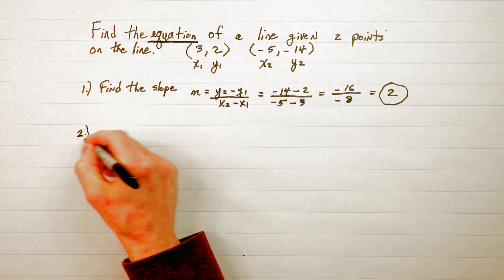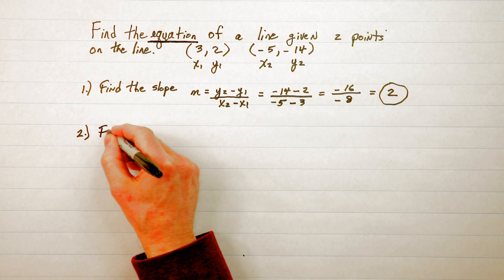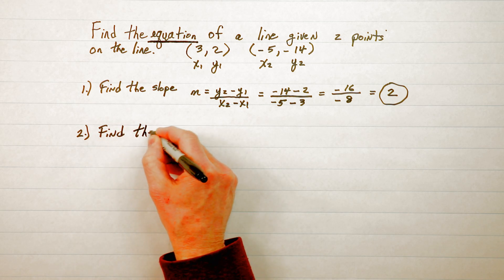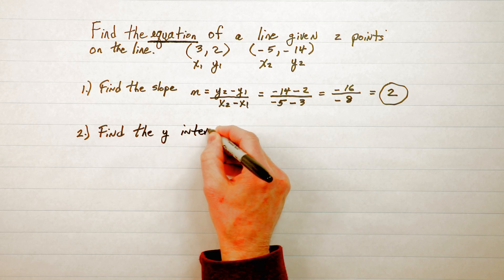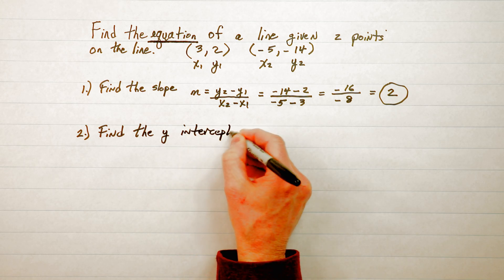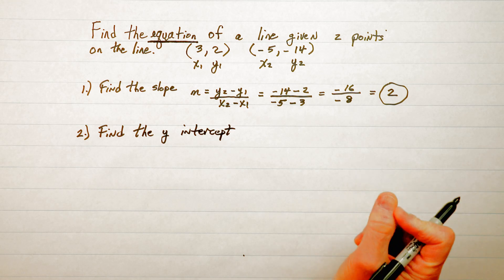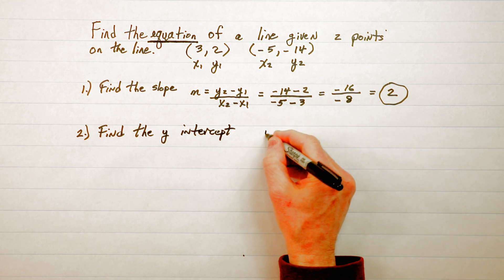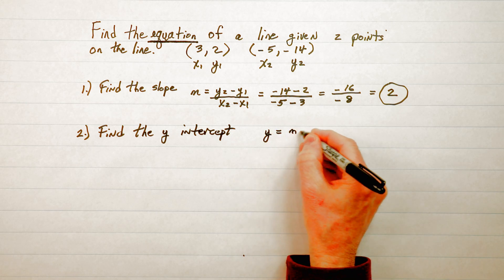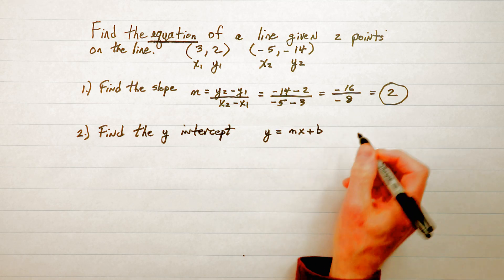Step 2 is find the y-intercept. Now the y-intercept in the equation y equals mx plus b, you've seen this before.